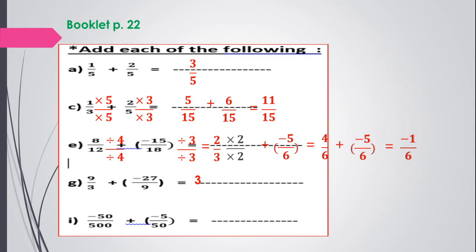Letter G: 9 over 3 can be simplified to 3. And negative 27 over 9 is also negative 3, because 27 is divisible by 9. This exercise is adding integers: 3 plus negative 3 — a number added to its inverse — the answer is 0.